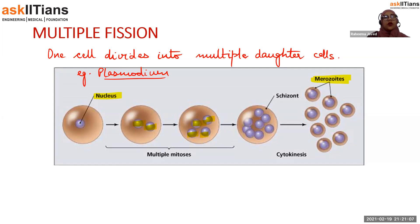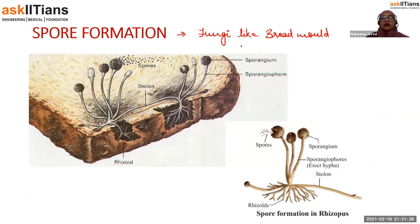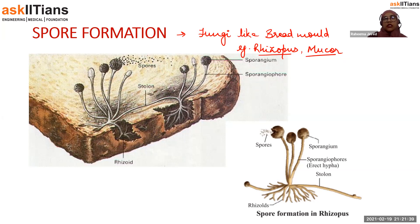Spore formation is common in fungi like bread mold. Examples include rhizopus, mucor, penicillium, and aspergillus, where reproduction occurs by spore formation, though the types of spores may differ.